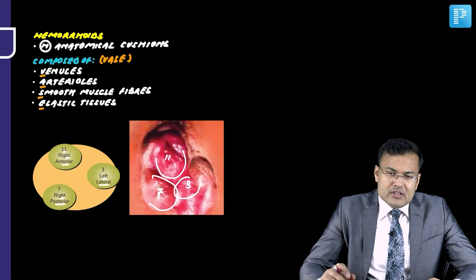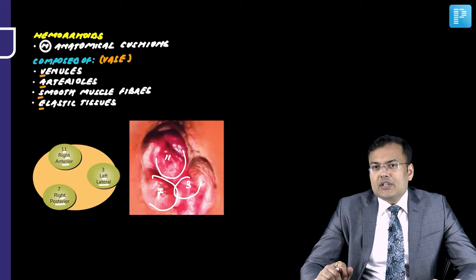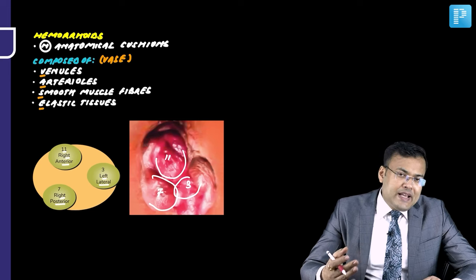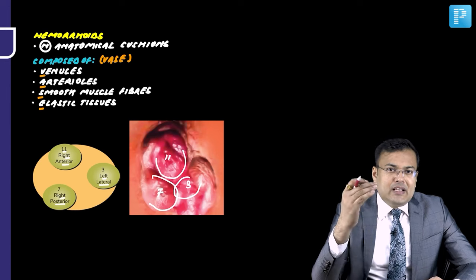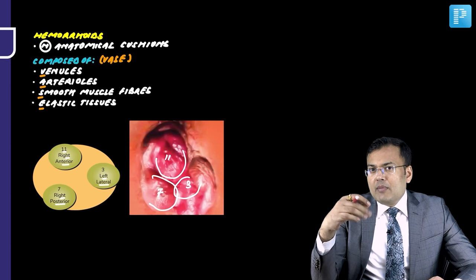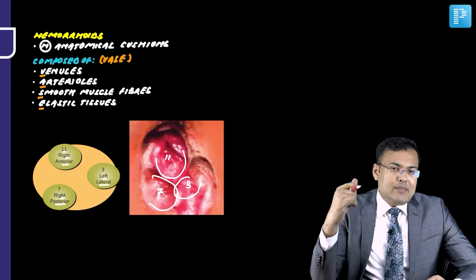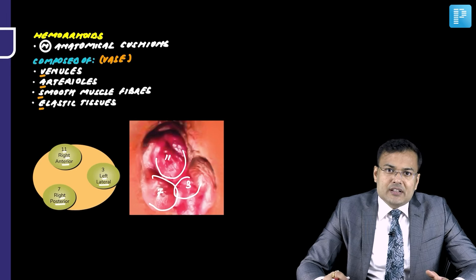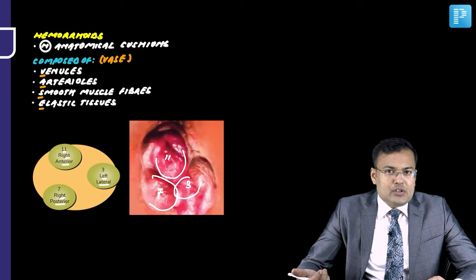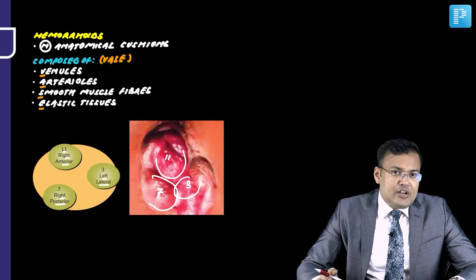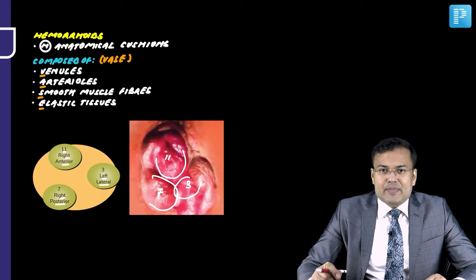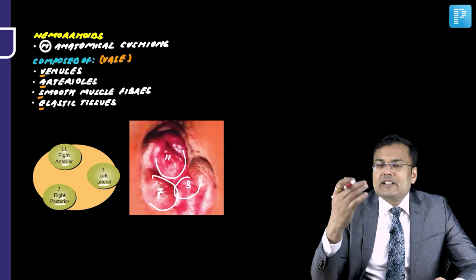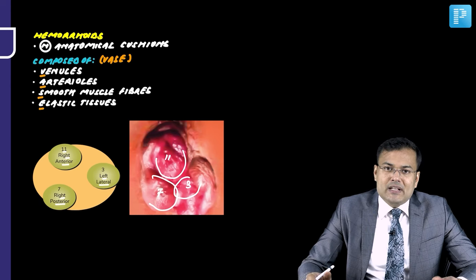Although hemorrhoids are normal anatomical cushions, they become a disease in patients with constipation. Because of excessive straining, there is abnormal descent of these hemorrhoids into the lower part of the anal canal. The hard fecal matter then injures these cushions, leading to painless bleeding after defecation.